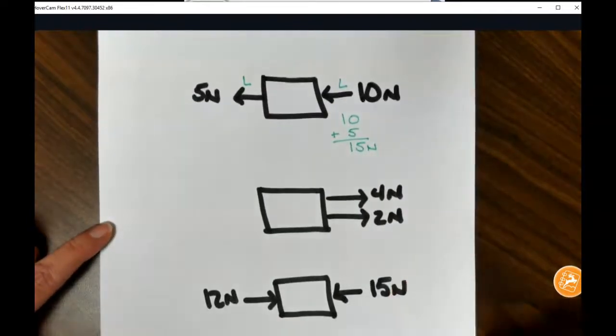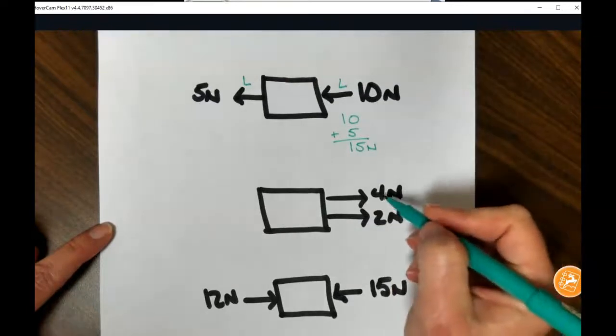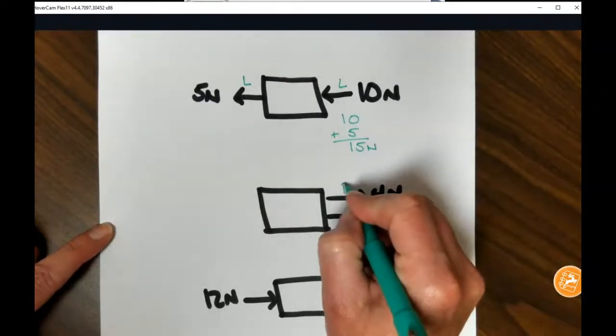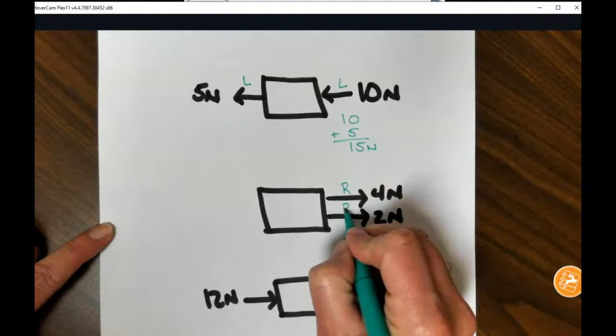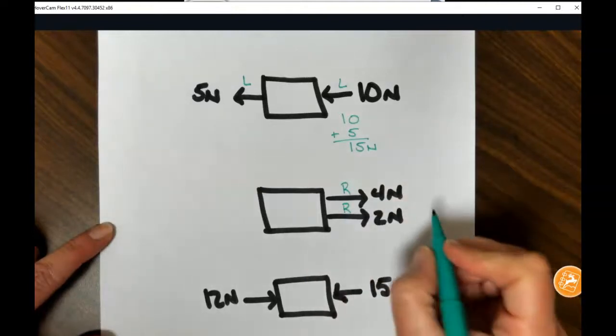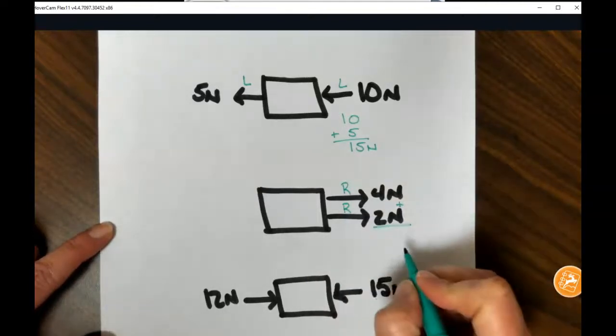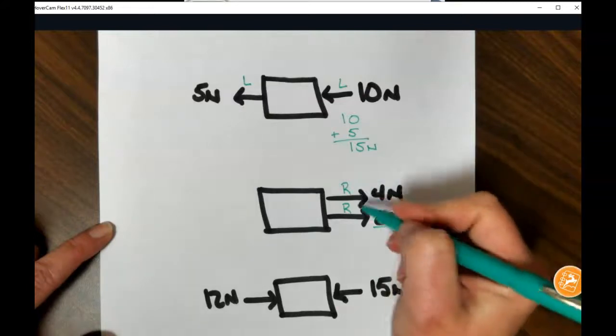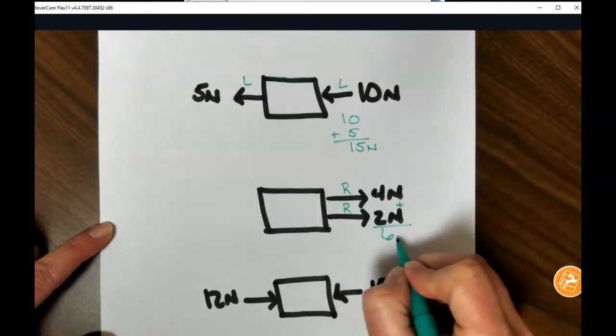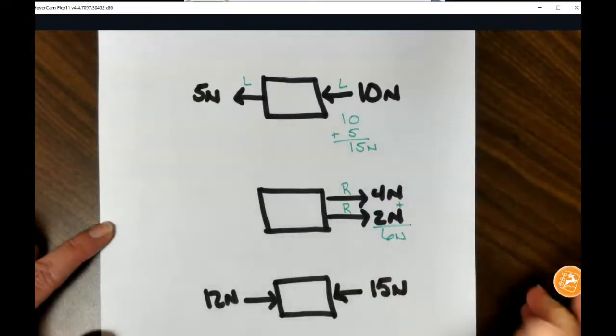The last scenario, we have four newtons of force to the right, two newtons of force to the right. So if we look at these, we need to add these because they're going in the same direction, both going to the right, for a net force of six newtons.